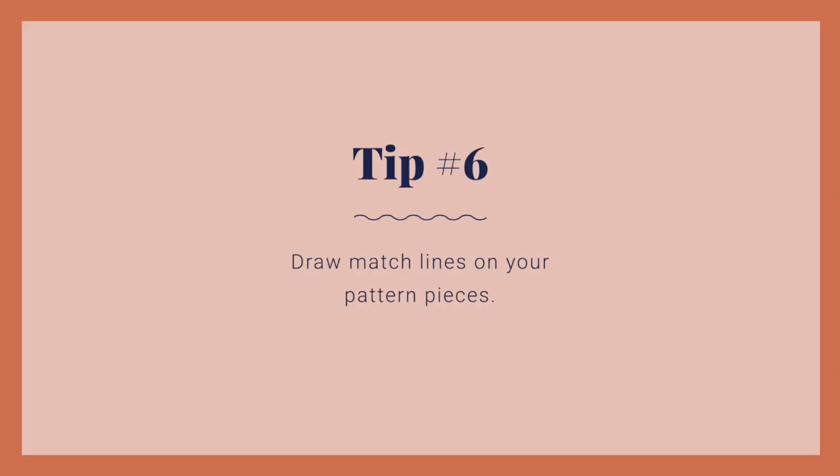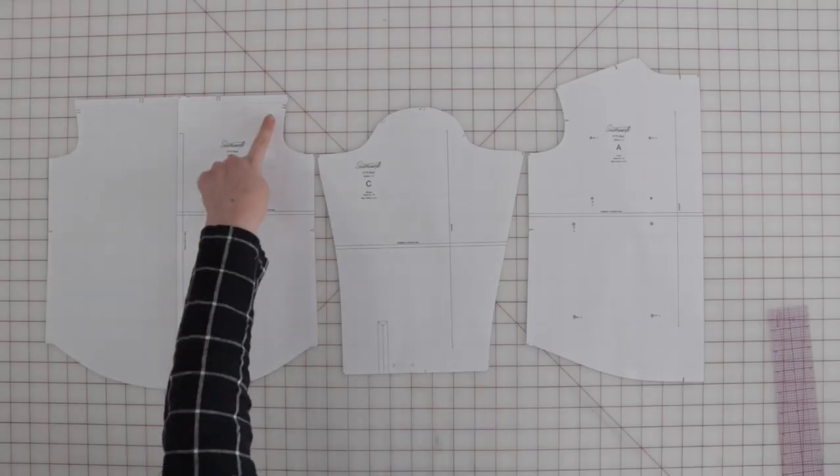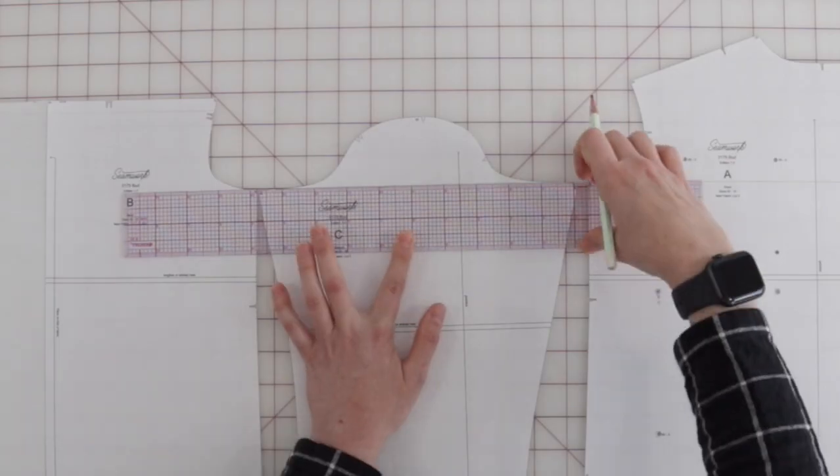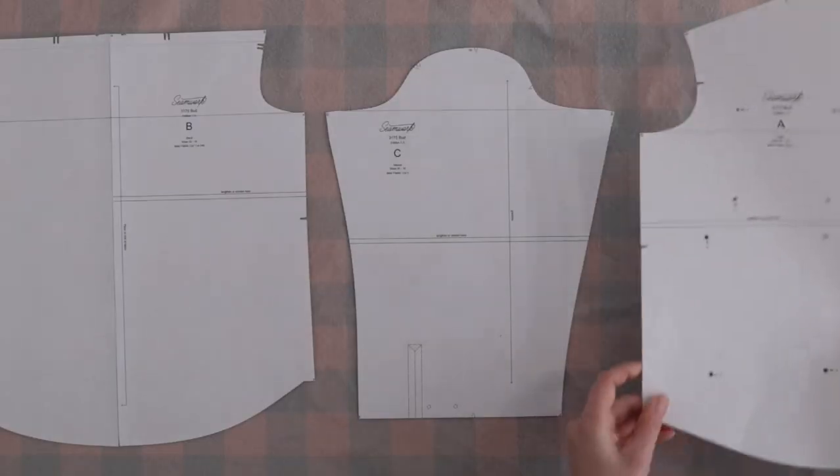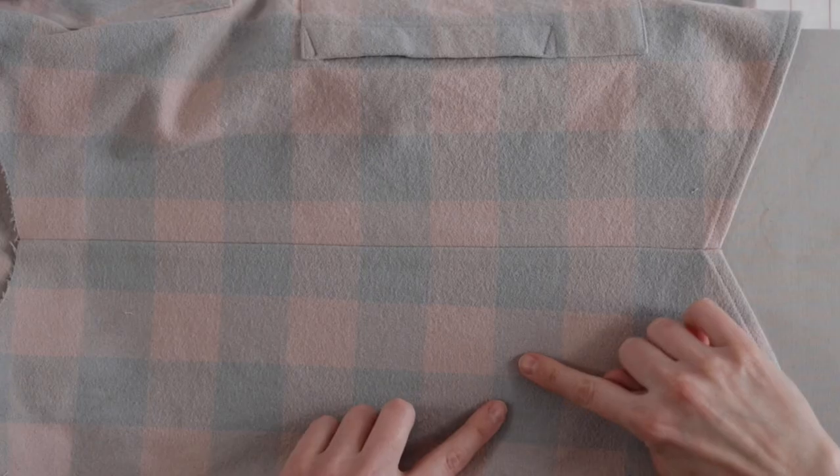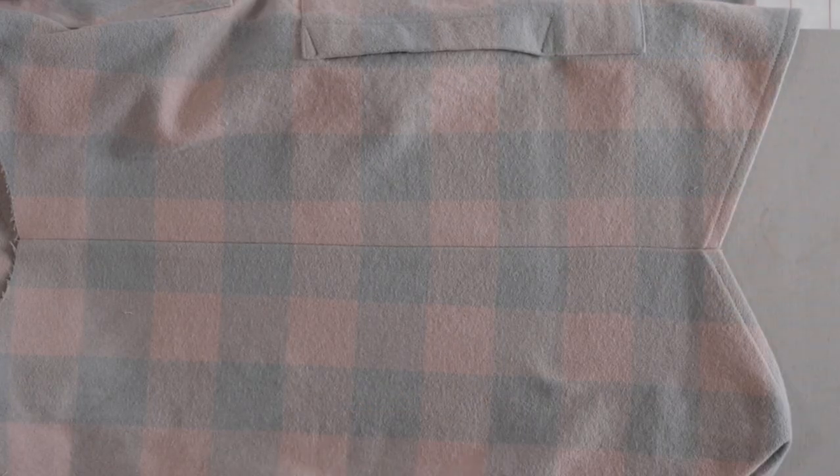Tip number six, draw match lines on your pattern pieces. For example, since patterns are drafted for the underarm points to meet, drawing a straight line connecting these points across the front, back, and sleeves is a quick way to make sure your plaids meet on these pieces. You can also use the notches on the side seams.